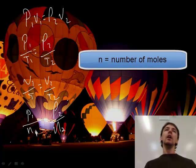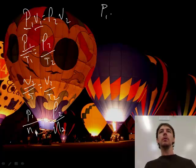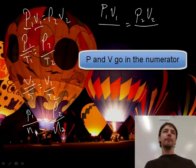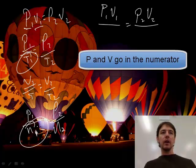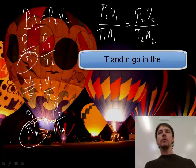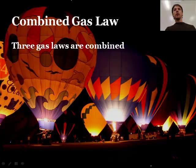So what we're going to do is combine these. Let's look at everything that's in the numerator: p and v are always in the numerator. So let's put those in the numerator - p1v1 over something equals p2v2 over something. What's it over? Everything in the denominator: temperature's in the denominator and moles are in the denominator. So it's p1v1 over n1t1 equals p2v2 over n2t2. This is the combined gas law.